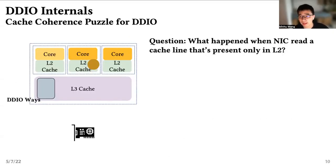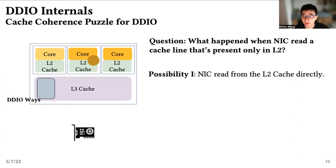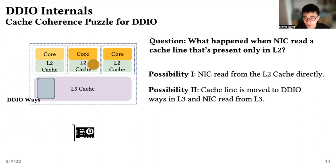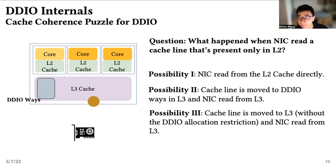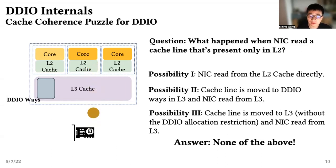For example, let's consider the case that NIC wants to read a cache line that's present only in L2. It has many possibilities of what will happen. Possibility 1: NIC may read directly from L2 and bypass L3. Possibility 2: NIC may move cache lines to the two DDIO ways and read from there. Possibility 3: NIC may move cache lines to anywhere in L3 and read from there, because this is not a DDIO write and may not be limited by the allocation rule. So what's the answer? The answer is not immediately clear from theory alone.